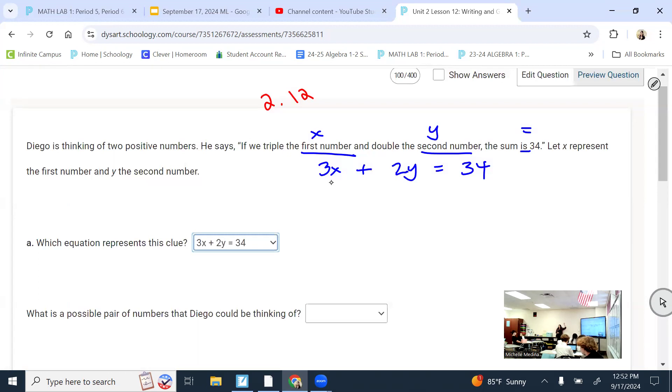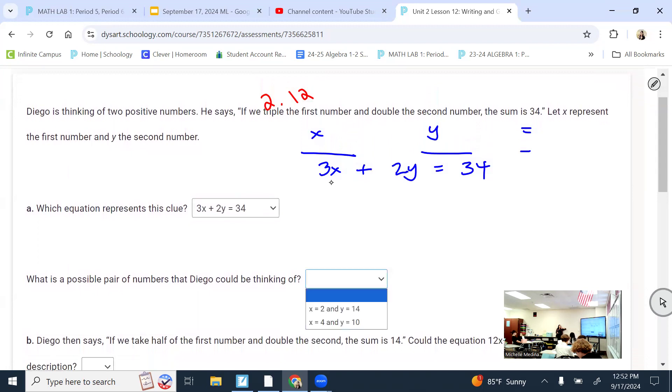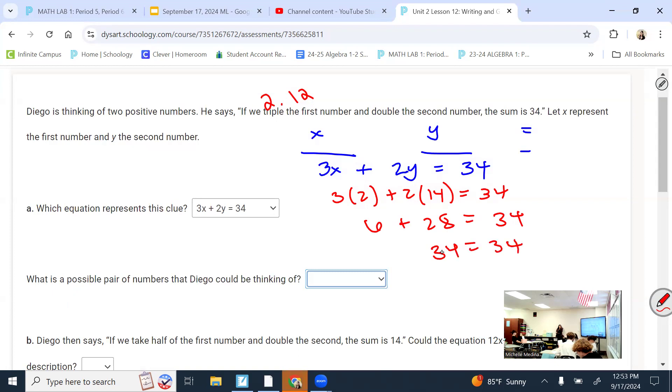If you don't need help with this one, I just need you to be quiet. So what is a possible pair of numbers that he could be thinking of? We need to look at the options and see which one plugged in makes it true. So let's try where X is 2 and Y is 14. We're going to see if this would make it true. What's 3 times 2? What is 2 times 14? What's 28 plus 6? Is it 34? So if it is true, then it can be a solution. If I tried the other one, I'd get 12 plus 20, which is not 34. So it has to be the first option.